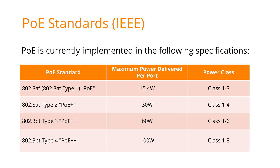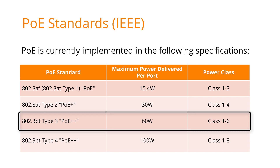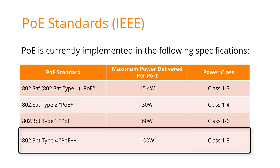PoE is the most common at the time of making this video, late 2021, and delivers a maximum power of 30 watts per port. The power class determines the range of wattage supported by the standard. For example, PoE++ class 6 supports a maximum of 60 watts, whereas PoE++ class 8 supports up to 100 watts per port.